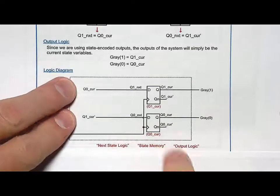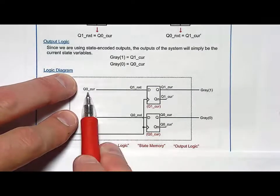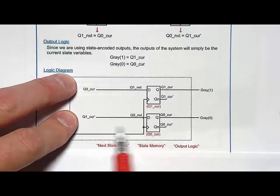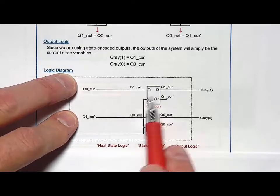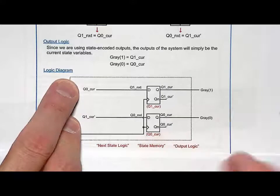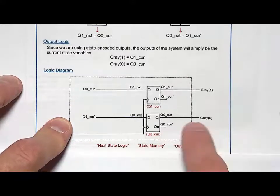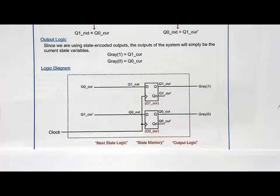The next state logic is pretty simple for this counter. Notice that q0cur can come directly from this d flip-flop. And then q1cur not can come from the inverted output of this one. So you can actually pull this off with just wires. Output logic, nothing more than wires directly to the current state. So I just wire them to q1cur and q0cur and I'm done. So it's a very simple process. So that was a 2-bit gray code up counter.